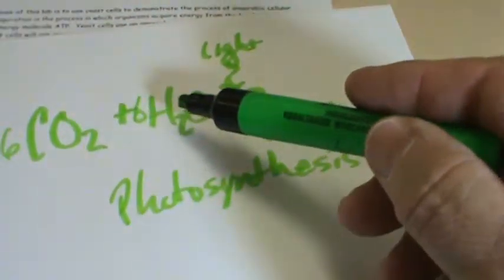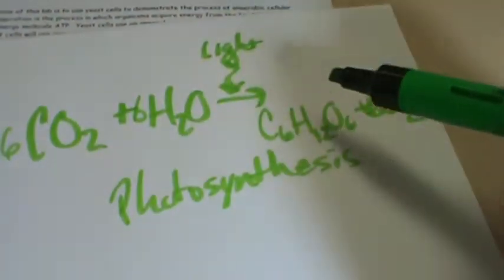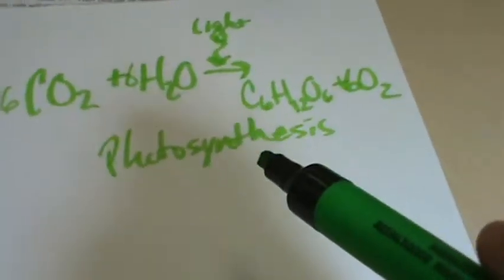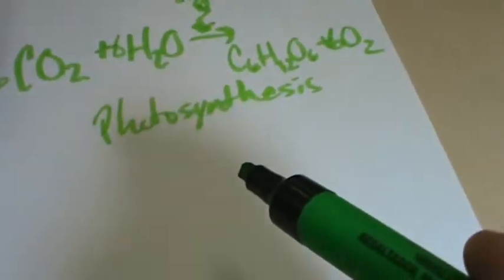This is what plants are doing all day long when the sun is out. They're taking carbon dioxide out of the air, water out of the ground, and they're making a sugar and giving off this waste gas that we breathe — oxygen — all in the presence of light, utilizing chlorophyll in the chloroplasts.